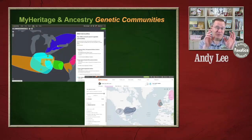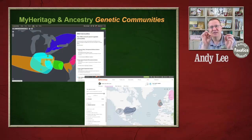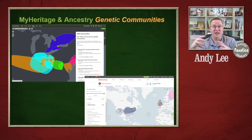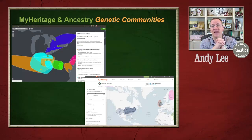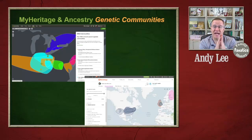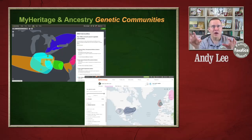Another set of tools you can find on both MyHeritage and Ancestry — they call them by different names — are basically genetic communities. This is not your ethnicity results or your admixture results. This is looking at groups of people that share DNA but also looking at their trees to see what is common. For instance, they might have been part of a migration to Ontario, Canada, involving different groups of people that migrated over certain periods of time. When you have somebody whose parents or grandparents are unknown — adoptees and similar situations — genetic communities gives you a way to identify where you should be looking.